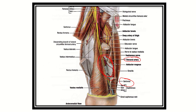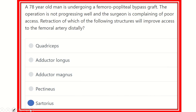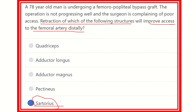Retraction of the sartorius muscle will improve access to the femoral artery distally. This region is actually the adductor canal, also known as Hunter's canal or the subsartorial canal — meaning the canal that lies beneath the sartorius. For femoral popliteal bypass grafts, the sartorius muscle should be retracted to improve access.